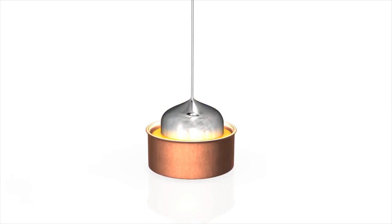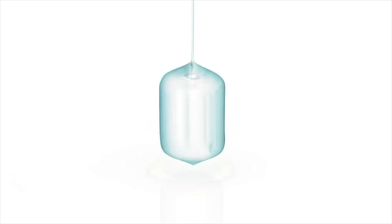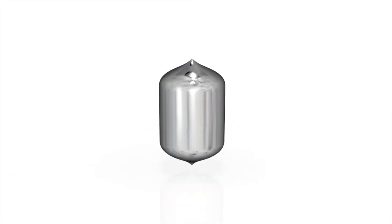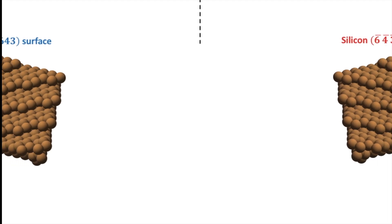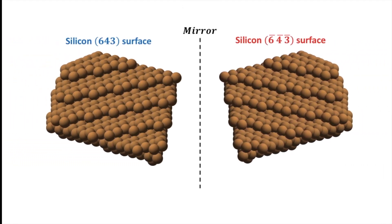Instead, an affordable, earth abundant material like silicon can be sliced to obtain a chiral surface. In bulk, silicon is not chiral, but along the 643 surface the atoms are arranged in a left and right hand form.